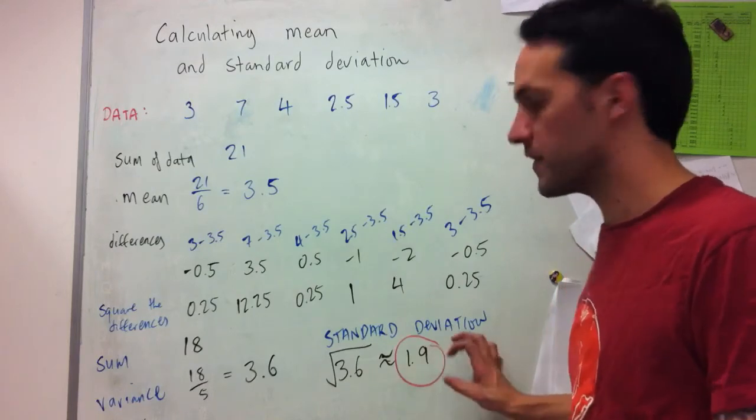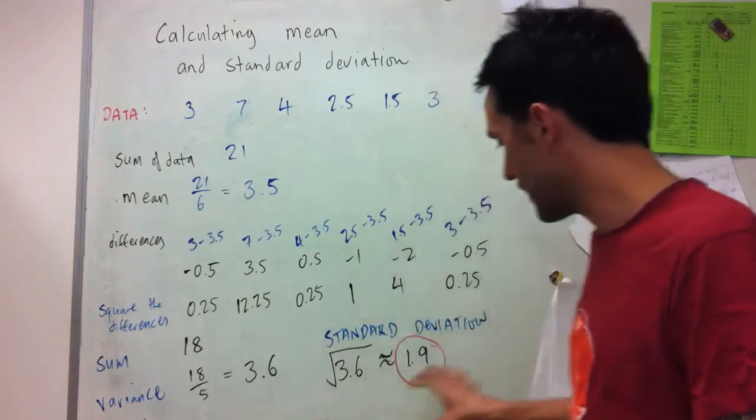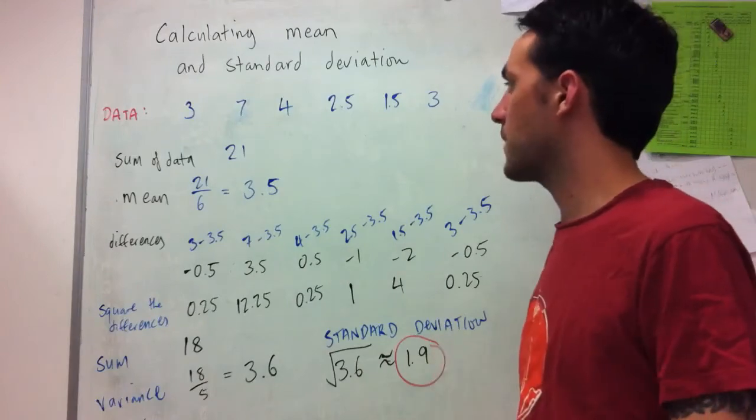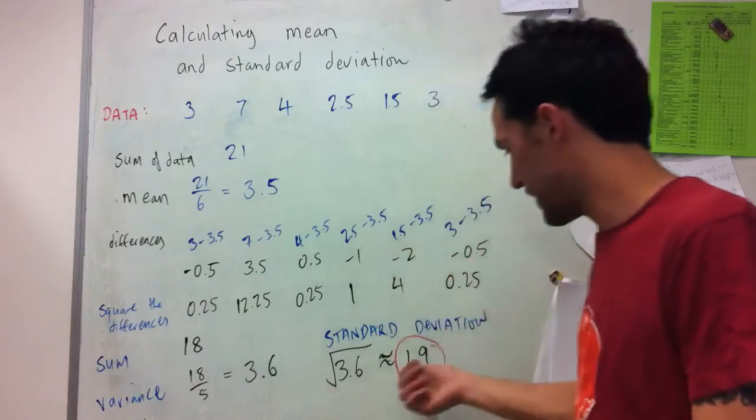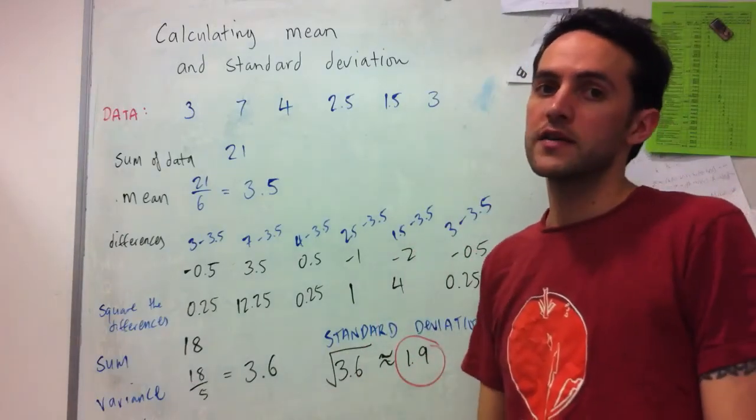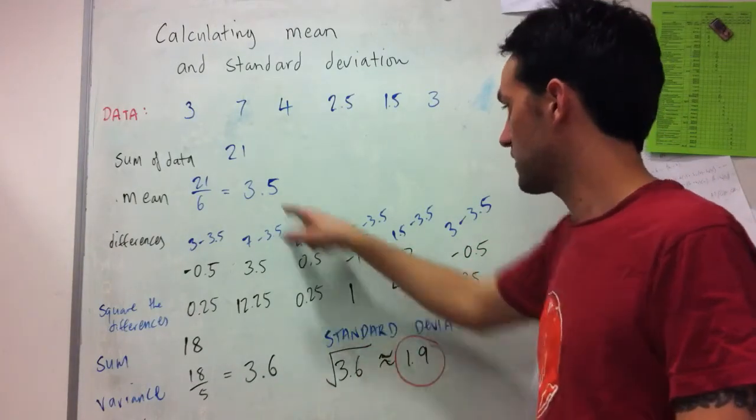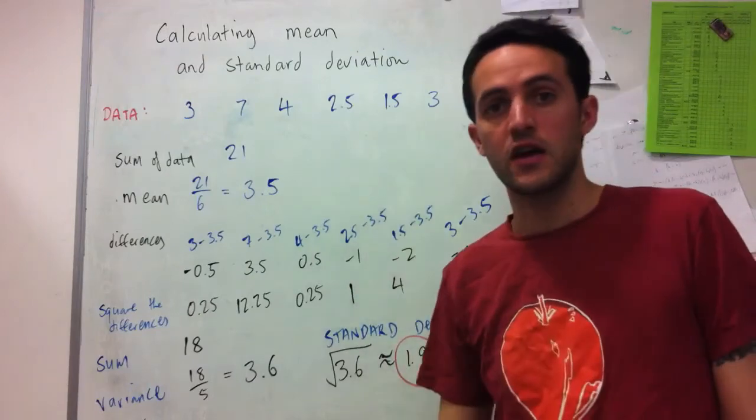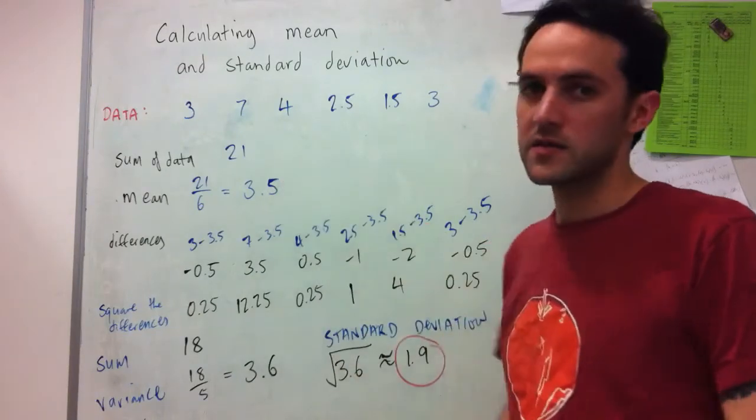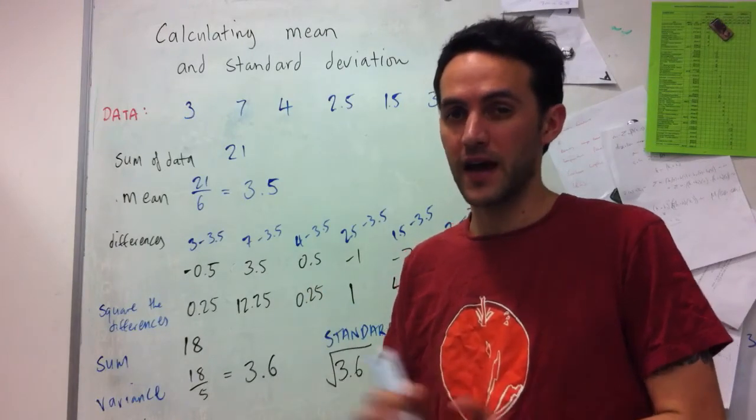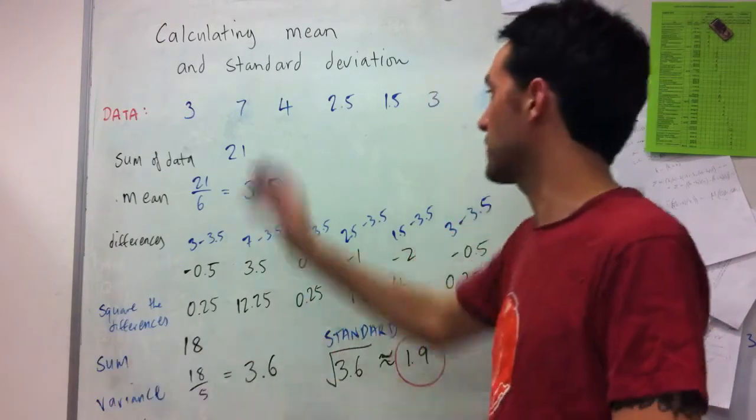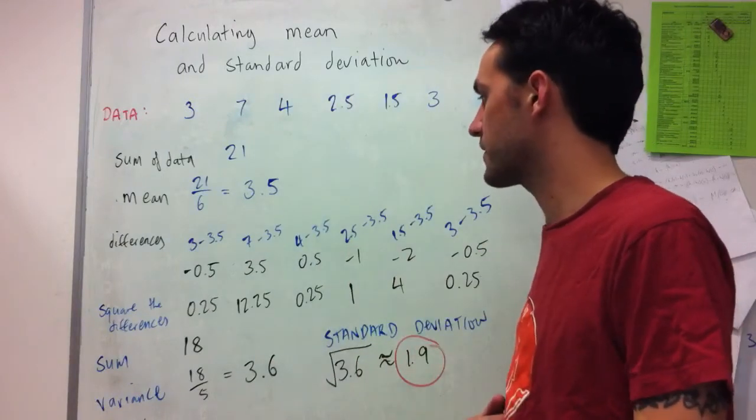But so what we have here, or the way that we can interpret this, is on average how much everything differs from the mean. So we say the mean is 3.5, but on average things are out by about 2. So really, given the relative difference of these, we would say that this mean isn't really very stable. Or, the data actually differs quite a lot from that, which we can see from looking at the data as well.